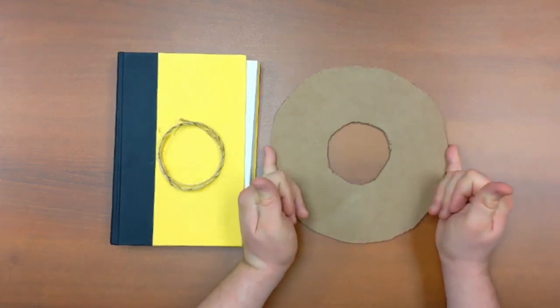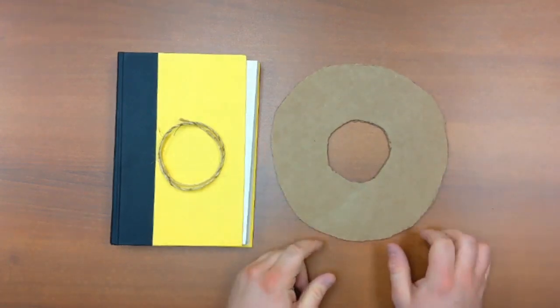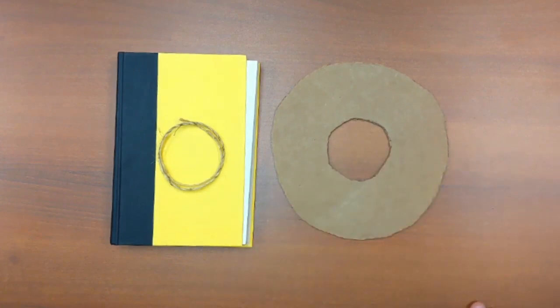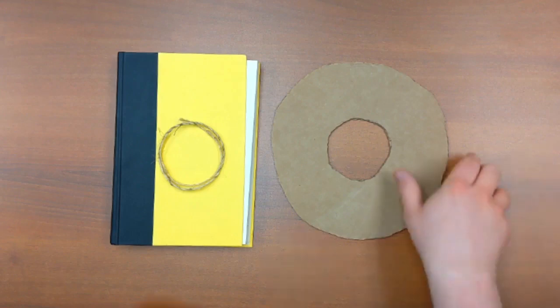Now one quick note, the cardboard ring I have here is about nine inches wide on the outside. I found that's a good size. The inside does not matter. You just want it to be wide enough that we can fit things through later.